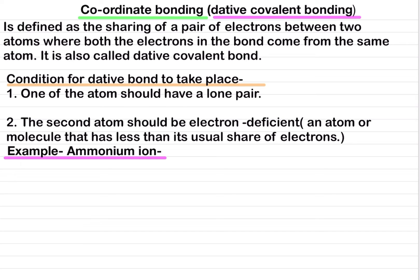Let us understand coordinate bonding with the example of the ammonium ion. In ammonia, the nitrogen atom has formed three covalent bonds with hydrogen atoms, which means nitrogen also has a lone pair of electrons. Nitrogen can use its lone pair to form a coordinate bond with the hydrogen ion.